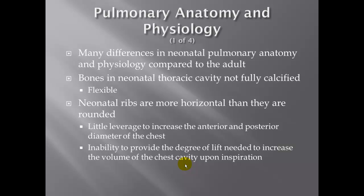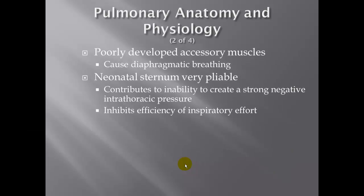There are many differences in the neonate's pulmonary anatomy and physiology compared to the adult. The bones of the neonatal thoracic area are not fully calcified, making them more flexible. Neonatal ribs are more horizontal than rounded, providing very little leverage to increase the anterior-posterior diameter of the chest and limiting inspiratory volume. Poorly developed accessory muscles cause diaphragmatic breathing. Neonatal septums are pliable, contributing to the inability to create strong negative intrathoracic pressure, inhibiting efficiency of the inspiratory effort.